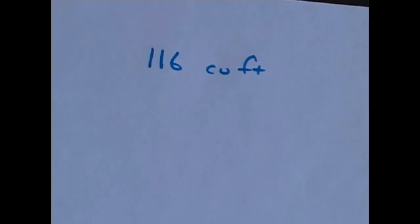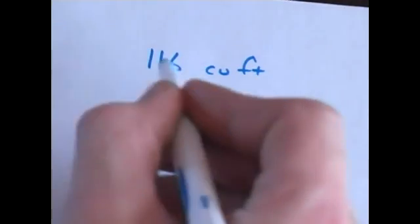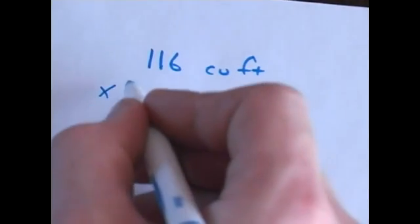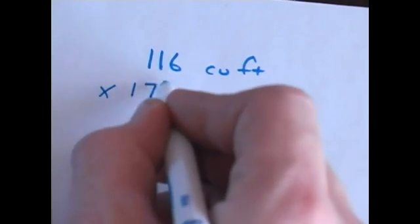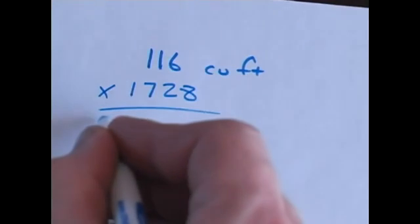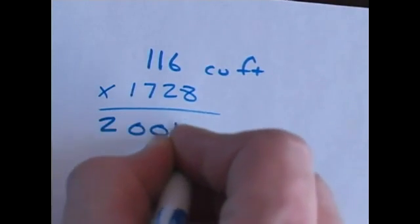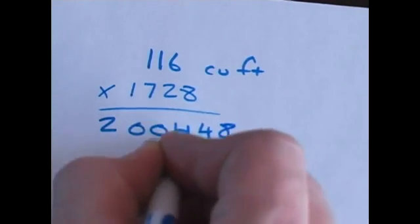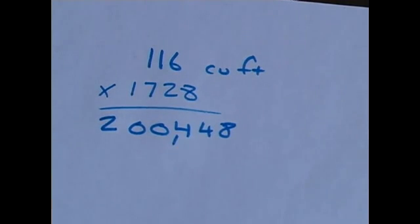If for some reason you need to convert cubic feet into cubic inches, there are 1,728 cubic inches in a cubic foot. So we're going to take our cubic footage and multiply that by 1,728, and that's going to give us a total of 200,448 cubic inches.